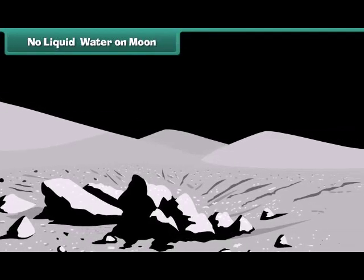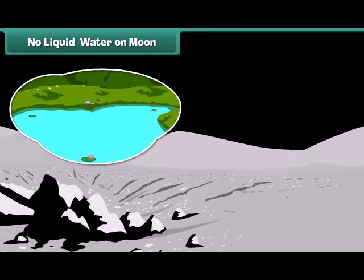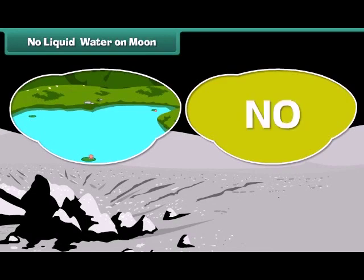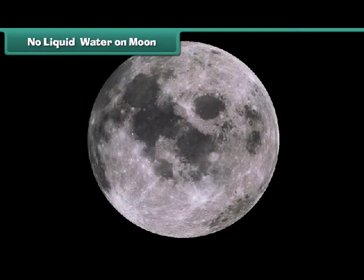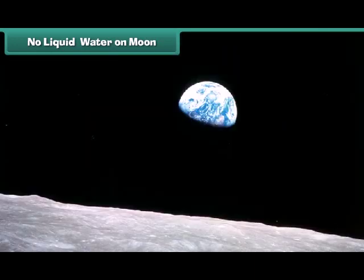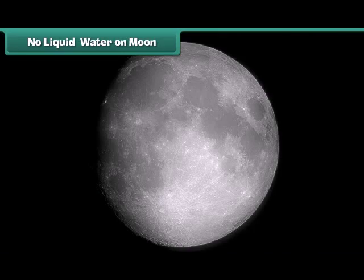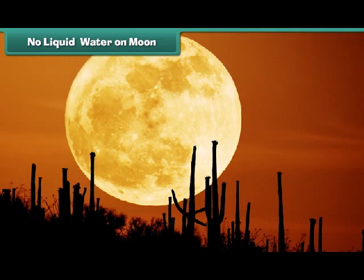Kids, do you think moon has also got water like our earth? No, there's no liquid water on moon, but there is some water in the form of ice. Recently NASA spacecraft discovered nearly about 100 kilograms of ice and water vapor near the moon's south pole. And yes, this is possible that there is more buried under the surface of the moon.